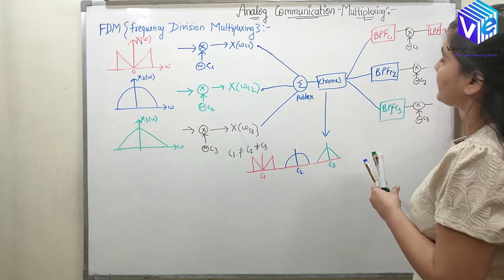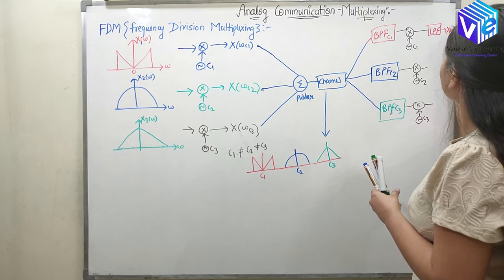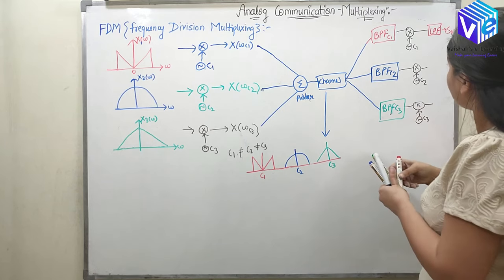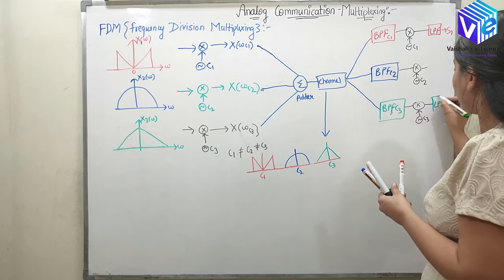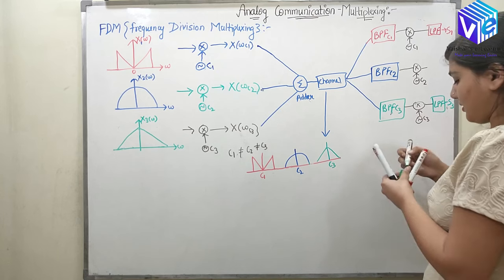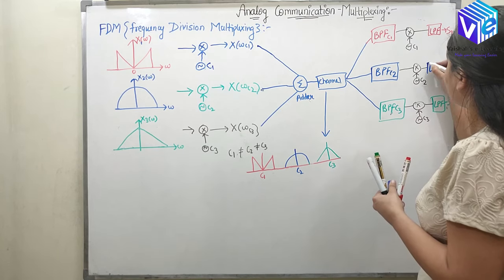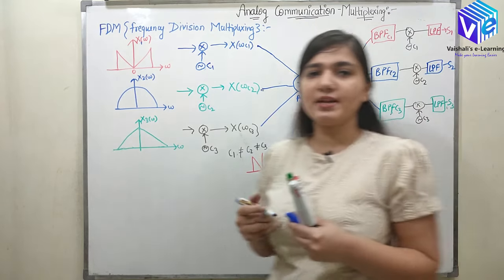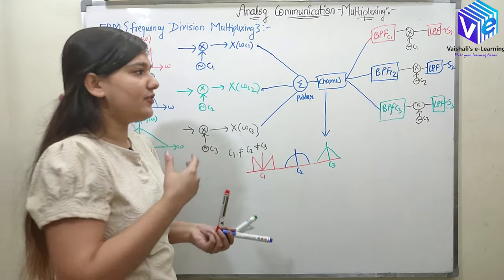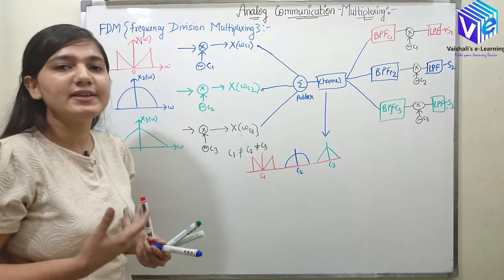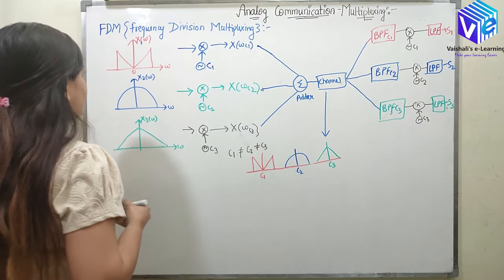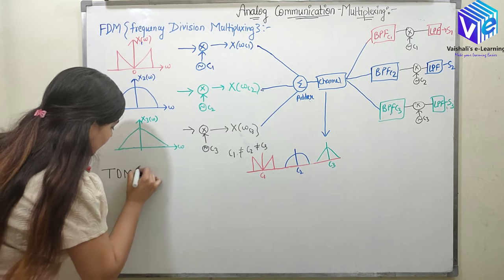And I'll get my signal back. This is x of omega — the first signal, represented as s1. After that I have a low pass filter and I'll get the third signal s3, and here I'll get the second signal as well. These signals are not getting mixed, and we can recover the exact signal which we sent. We are sending them on different frequencies — this is called Frequency Division Multiplexing, because we are dividing the frequency band for each signal.